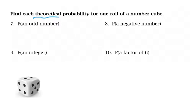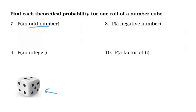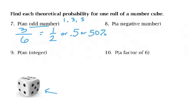The next problem says to find the theoretical probability — just predicting what's going to happen if I do one roll of a number cube. What's the probability of getting an odd number? Going back to our definition, the number of desirable outcomes: there are three odd numbers — 1, 3, and 5 — so three desirable outcomes out of six possible outcomes, which is 3/6 or one half. Since the directions don't specify how to write the answer, we have a reduced fraction, a decimal, or a percent — I'd prefer the fraction or decimal for accuracy.